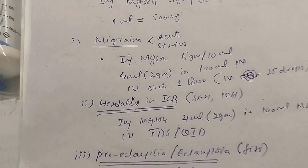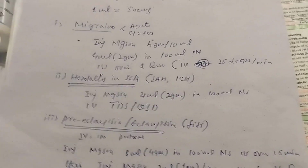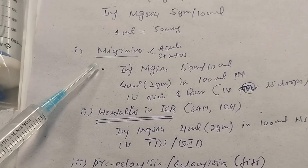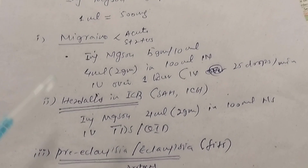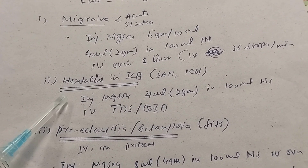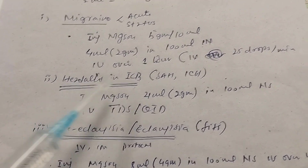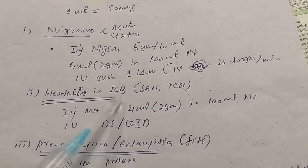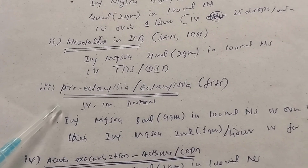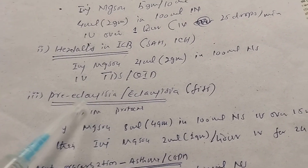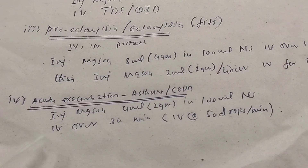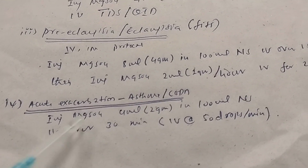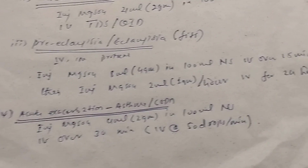The uses of magnesium sulfate include: migraine headache — acute or status migraine; headache due to intracranial bleed; preeclampsia and eclampsia for fits; and acute exacerbation of asthma and COPD.